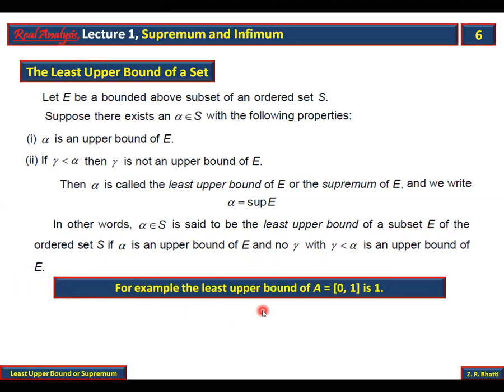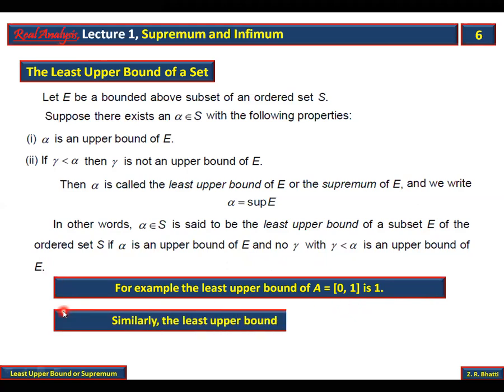For example, the least upper bound of A = [0,1] is 1. Why? Because 1 is an upper bound, 2 is an upper bound, 3 is an upper bound, 3/2 is an upper bound — but the smallest among all these upper bounds is 1. So 1 is the least upper bound. Similarly, the least upper bound of the open interval (0,1) is also 1, because 1 is still the smallest upper bound.